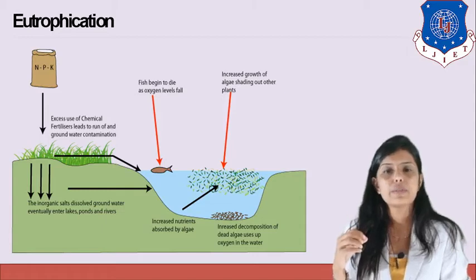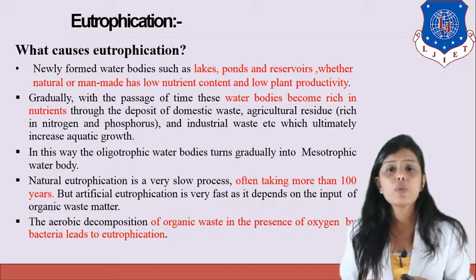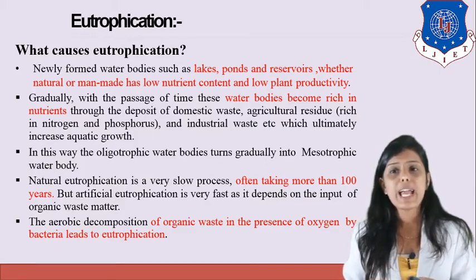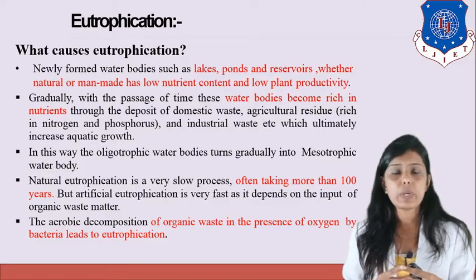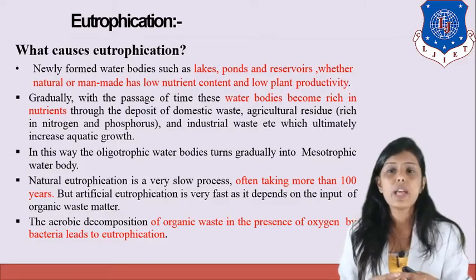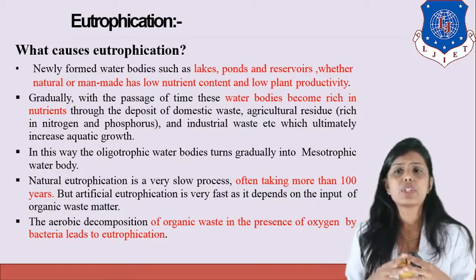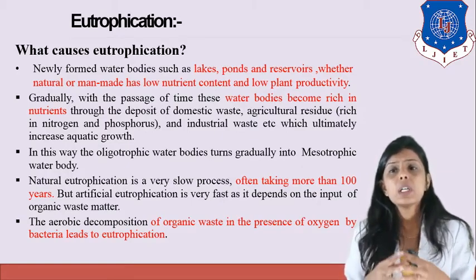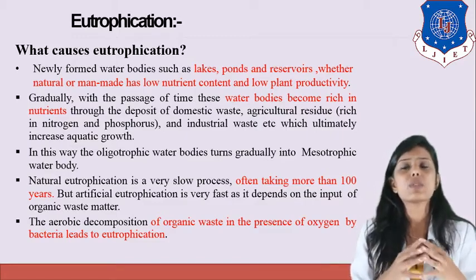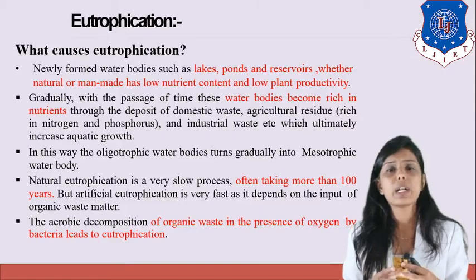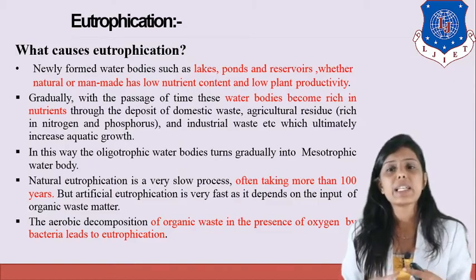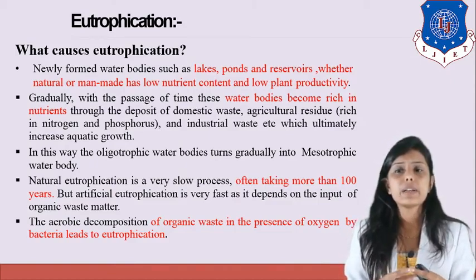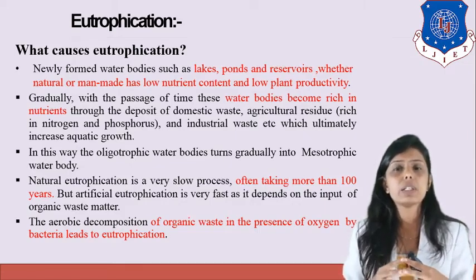What causes eutrophication? Newly formed water bodies such as lakes, ponds, and reservoirs — whether natural or man-made — have lower nutrient content and low plant productivity. Gradually, these water bodies become rich in nutrients through deposits of domestic waste, agricultural residue rich in nitrogen and phosphorus, and industrial waste, which ultimately increases aquatic growth. Natural eutrophication is very slow, often taking more than 100 years, but artificial eutrophication happens very fast.